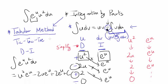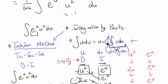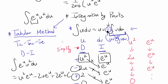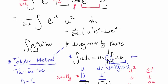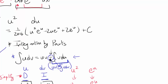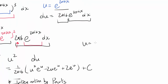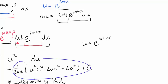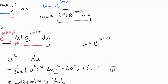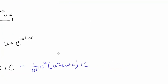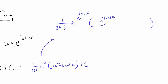So we know this integral of e to the u times u squared du equals 1 over 2016 times u squared e to the u, minus 2u e to the u, plus 2 e to the u, plus C. Now let's simplify, knowing that u equals e to the 2016x. We can factor out e to the u: we get 1 over 2016 times e to the u, times the quantity u squared minus 2u plus 2. Substituting back, e to the u is e to the 2016x, u squared is e to the 4032x, and 2u is 2 times e to the 2016x, plus 2, plus C.